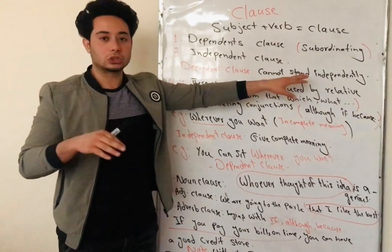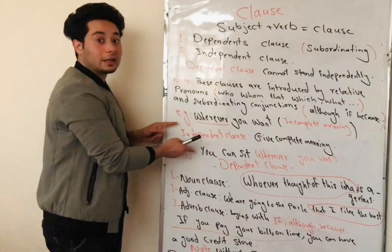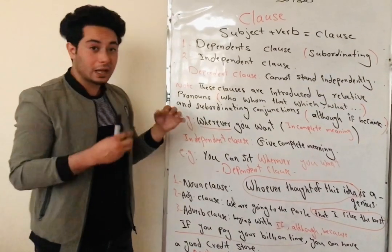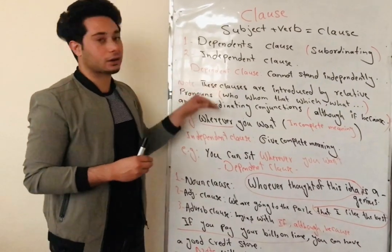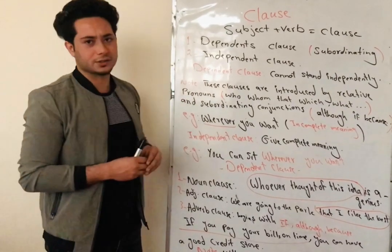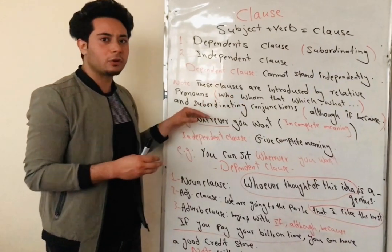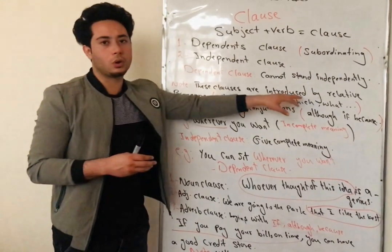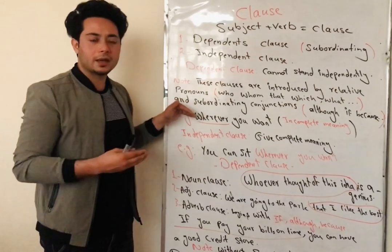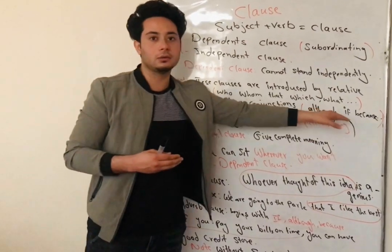So in order to give a complete meaning, dependent clauses need an independent clause to complete their meaning. Here is a note for dependent clauses: how can we simply analyze what are dependent clauses? Dependent clauses are introduced by a relative pronoun — for example, what, whom, who, which — and also they can be introduced by a subordinating conjunction, for example, if, although, and because.